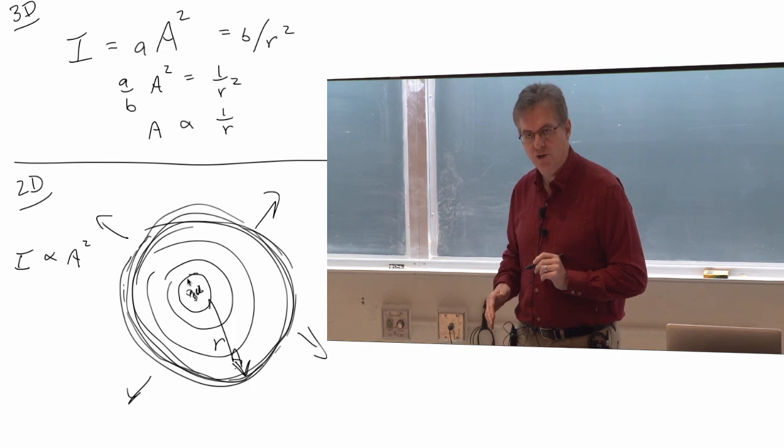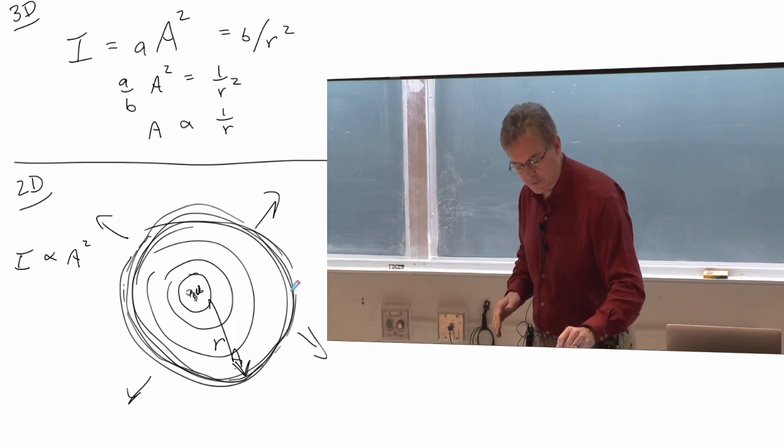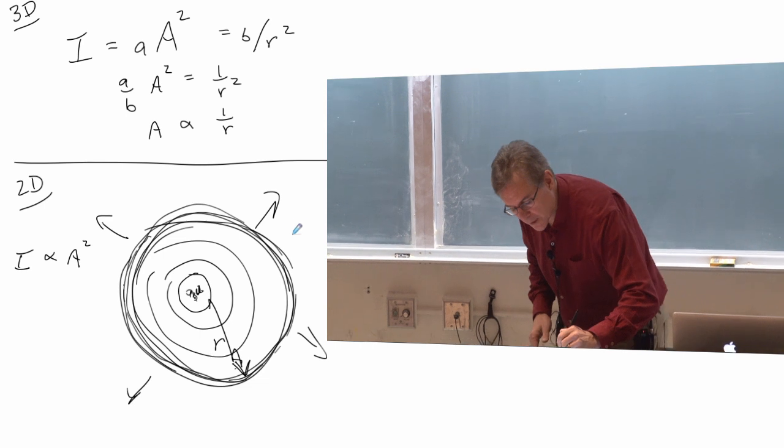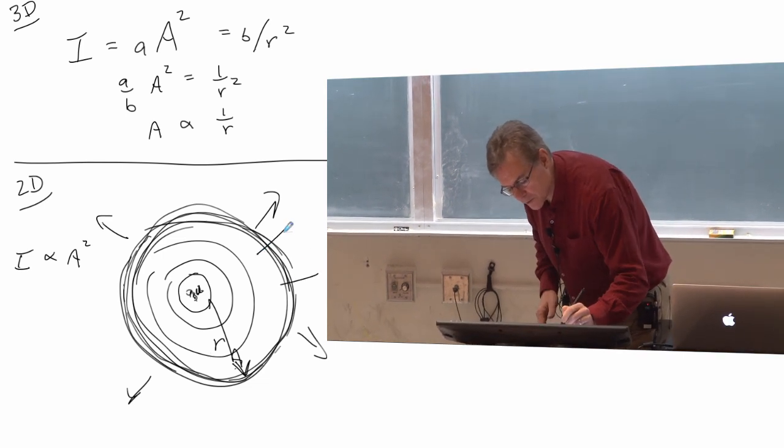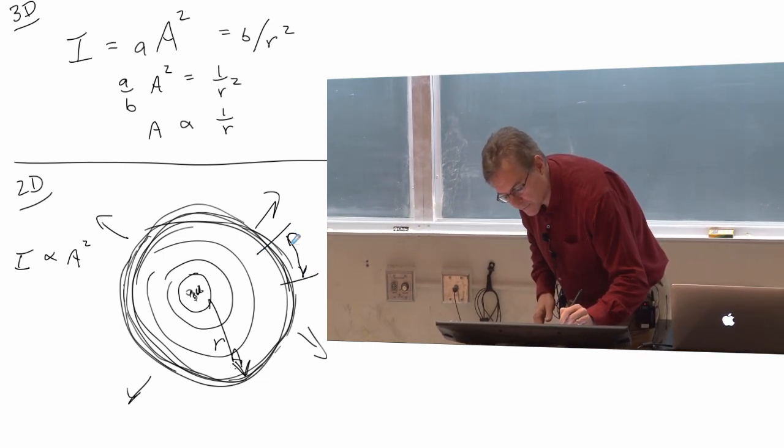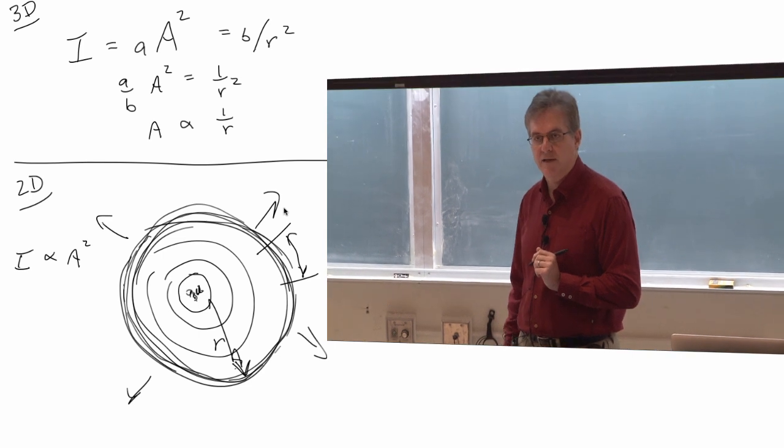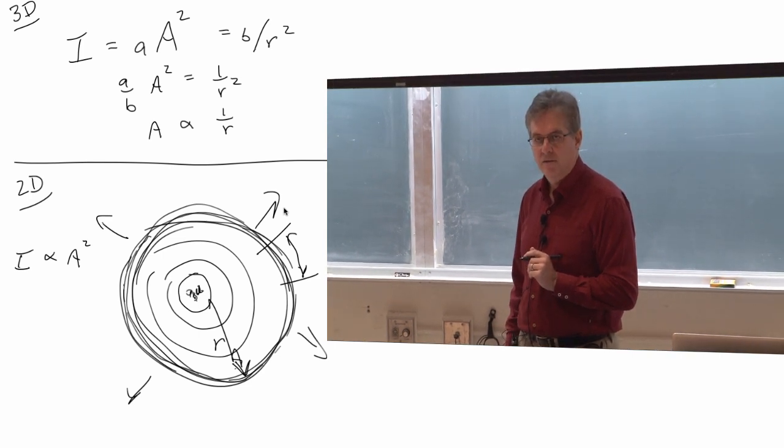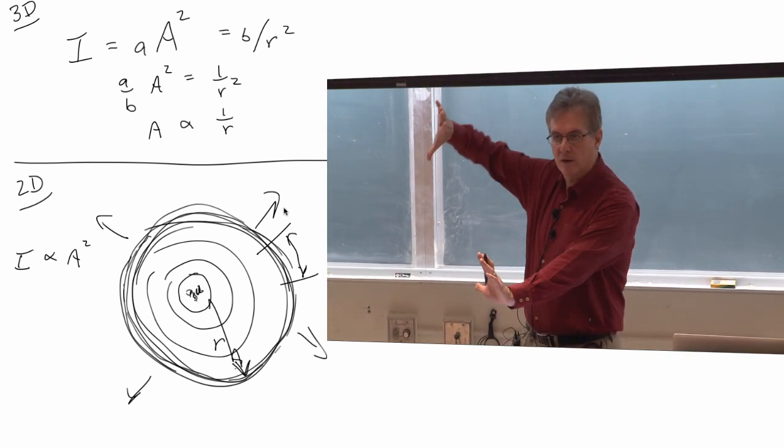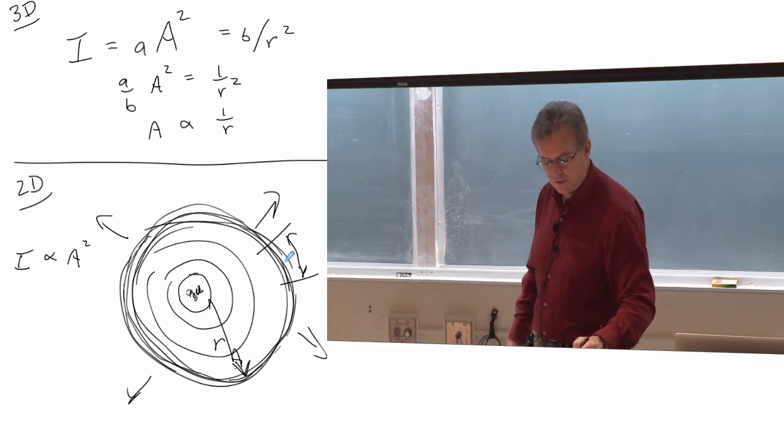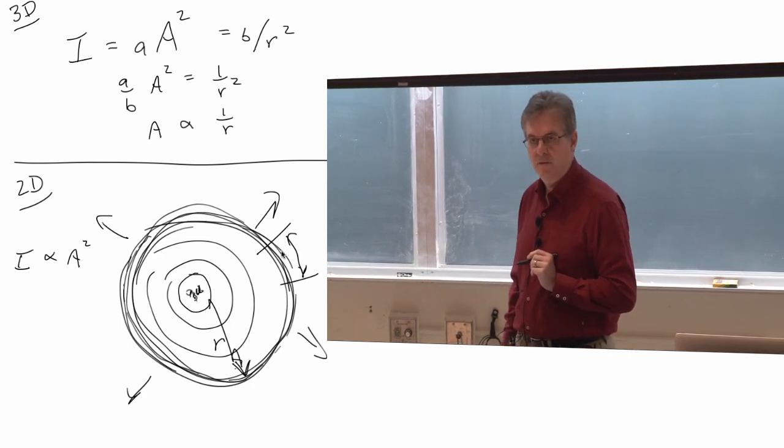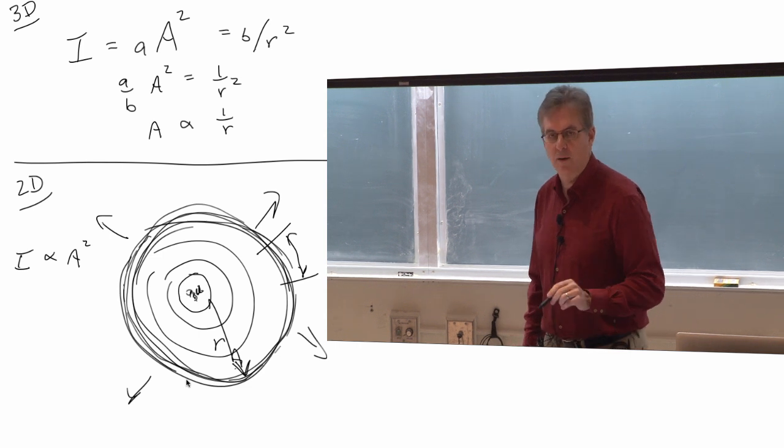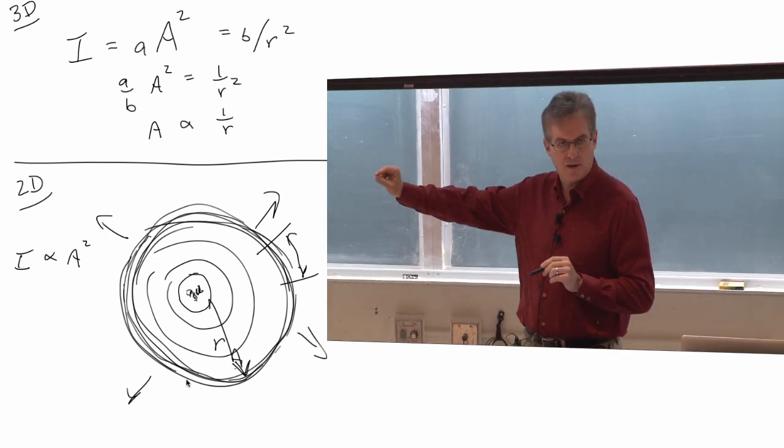All that initial energy is spread out over this circle. So we need to know how much energy per unit distance along the circle we have. Our intensity is now not just energy per unit area, but energy per unit distance along the circle.